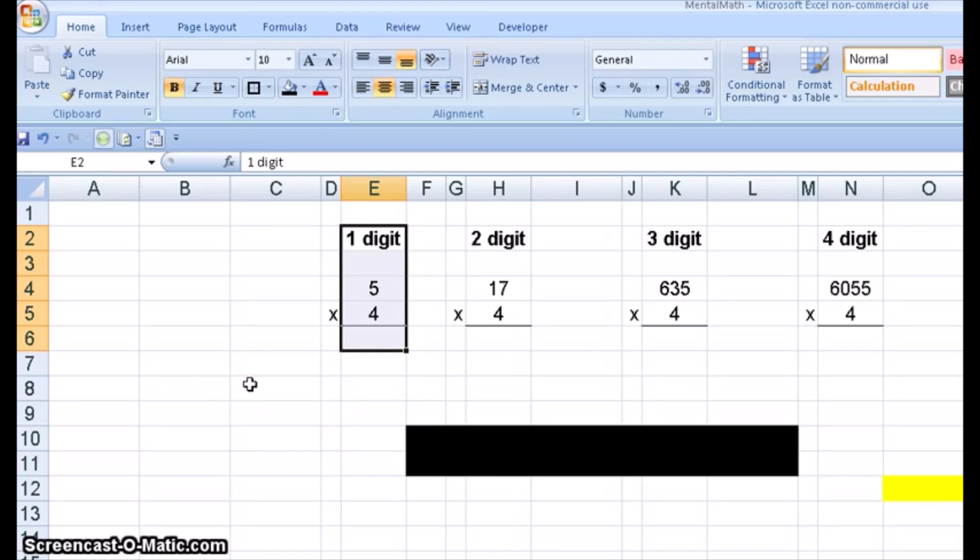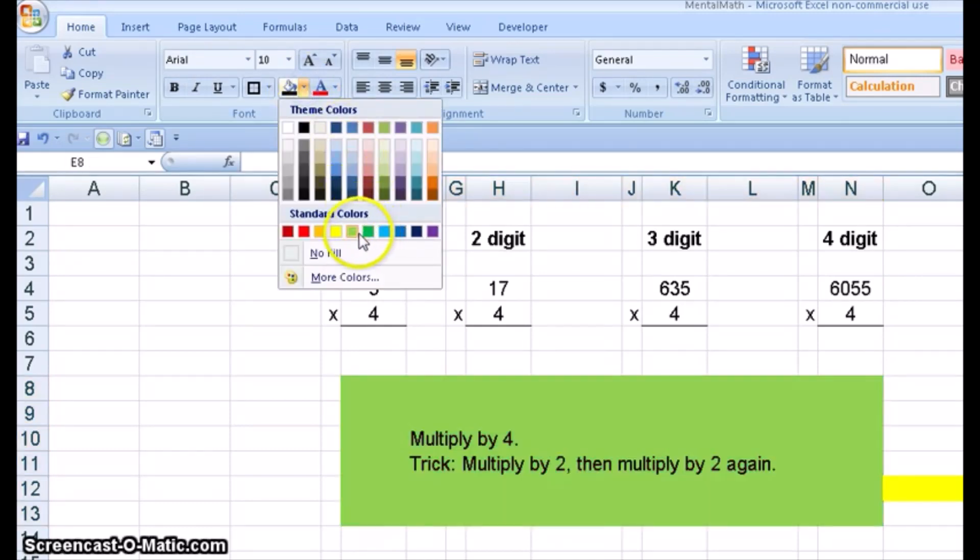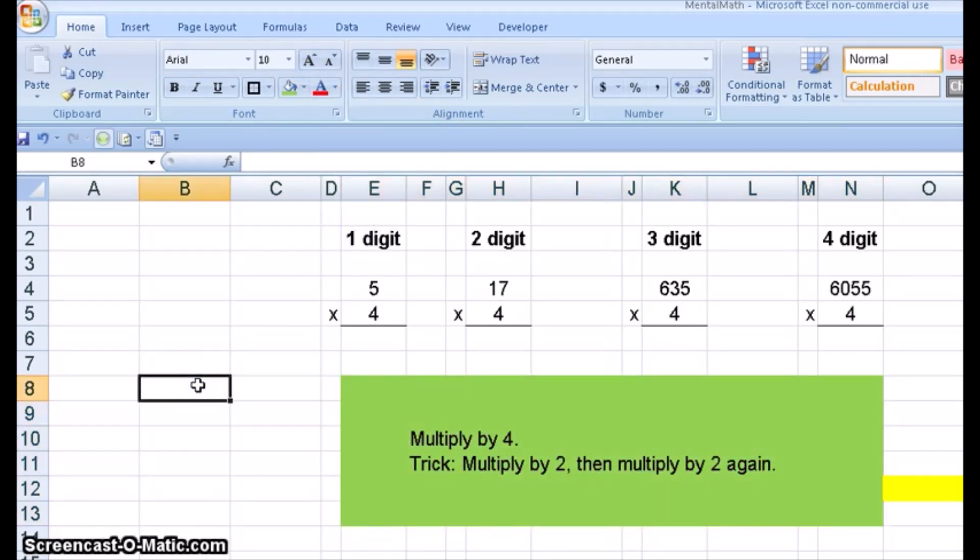So let me show you the trick. I'm going to highlight this and change it to a nice pleasing green. So the trick to multiplying by four is just to think of it as multiplying by two and then multiply by two again. So let's do the first one using the trick. Five times two is 10. 10 times two is 20. So five times four is 20.